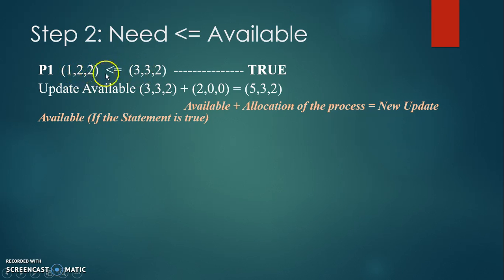Is 2 less than 3? Yes, true. Proceed. Is 2 less than or equal to 2? Yes, true. If all the numbers are true, then write it down true and update the available: (3, 3, 2), the current available, plus the allocation of the process. From the timetable, write down P1 allocation: (2, 0, 0), then add as usual.